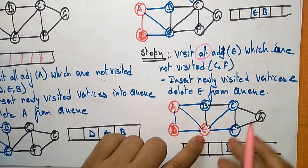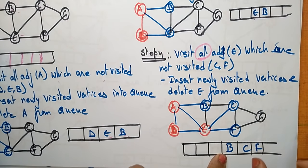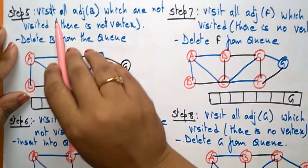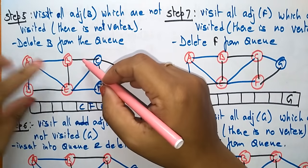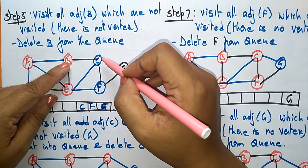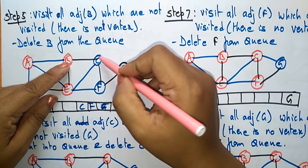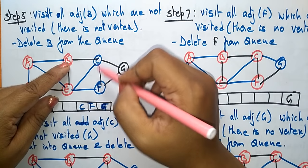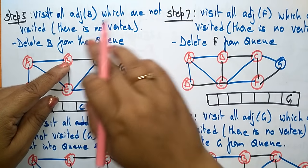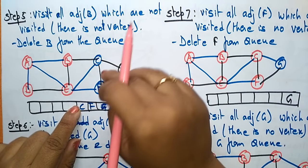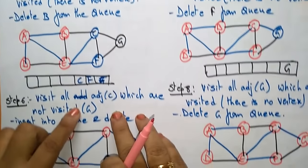After B, place C and F in the queue. Now check B. Visit all adjacent vertices of B which are not visited. C and F are already visited (shown as blue circles). There are no new vertices to be visited from B, so delete B from the queue.